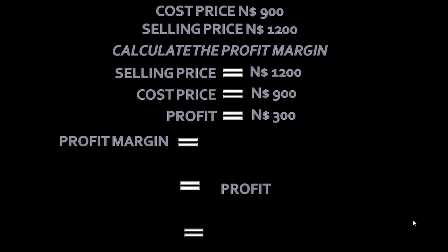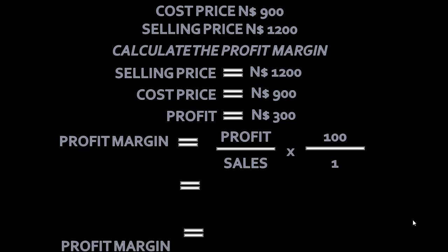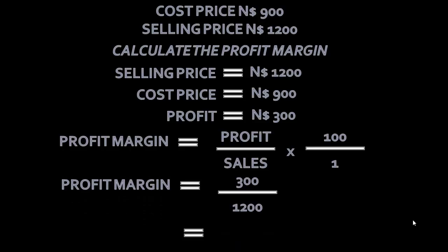Now we can calculate the Profit Margin. The formula for the Profit Margin is Profit over Sales times 100 over 1. Then we can rewrite the formula as follows: $300 over $1,200 because $300 is the profit and the $1,200 is the selling price or the sales times 100 over 1.